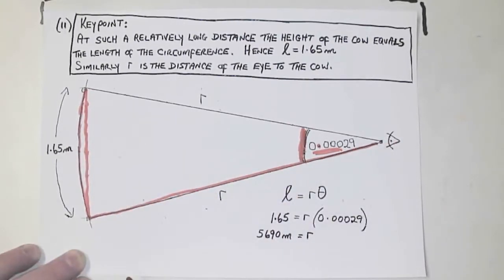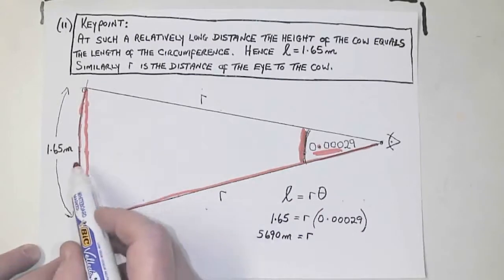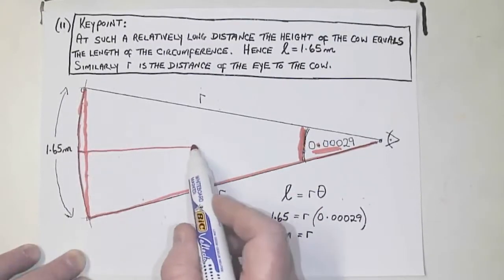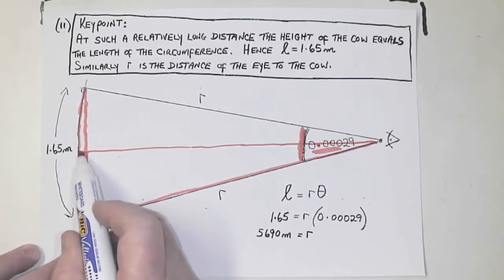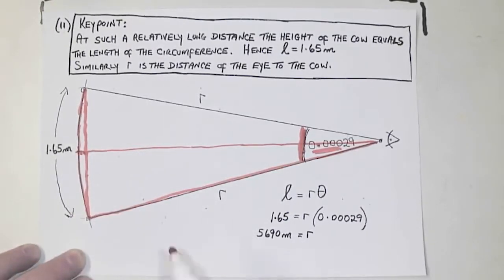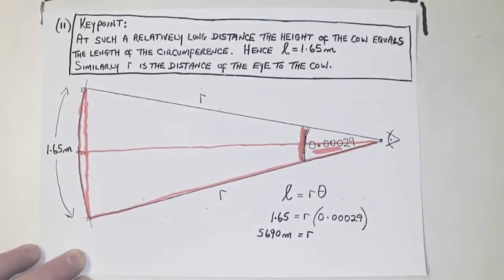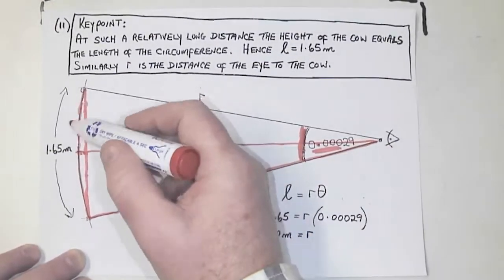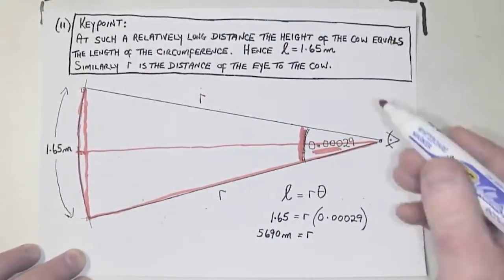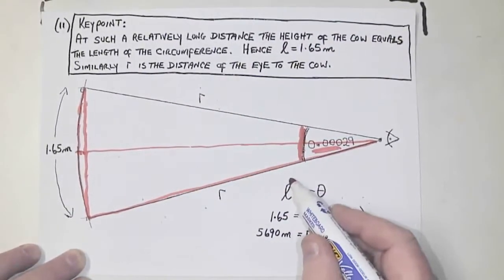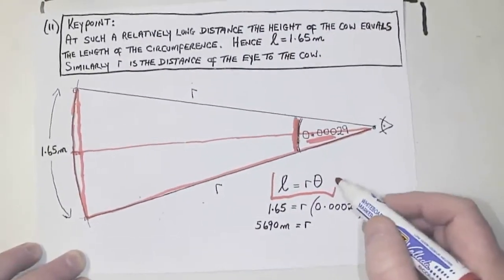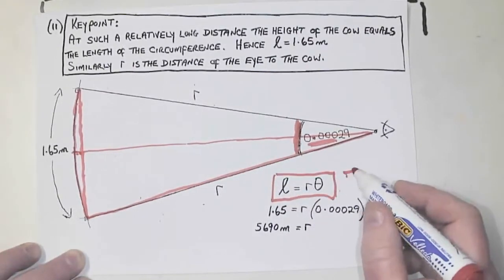So when this person is looking at the cow here, you've got R. And the distance from there to there is R. And it's a shade further away than the cow. But at such a relatively long distance, the height of the cow equals the length of the circumference. Hence, L is 1.65, the height of the cow. There's the formula that we should be familiar with. It's in the tables as well.